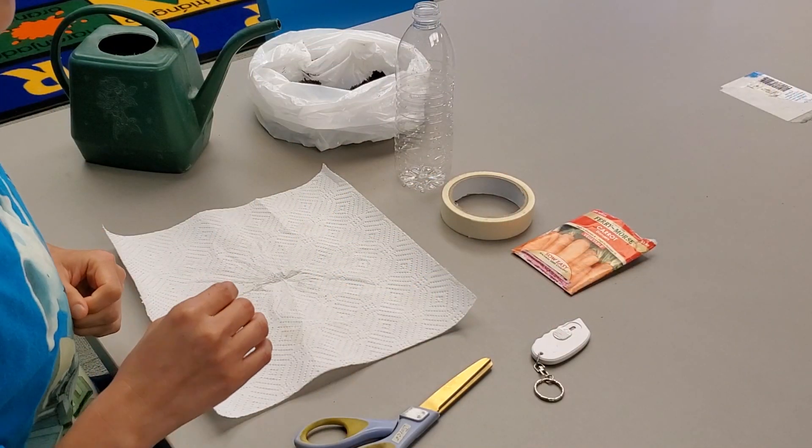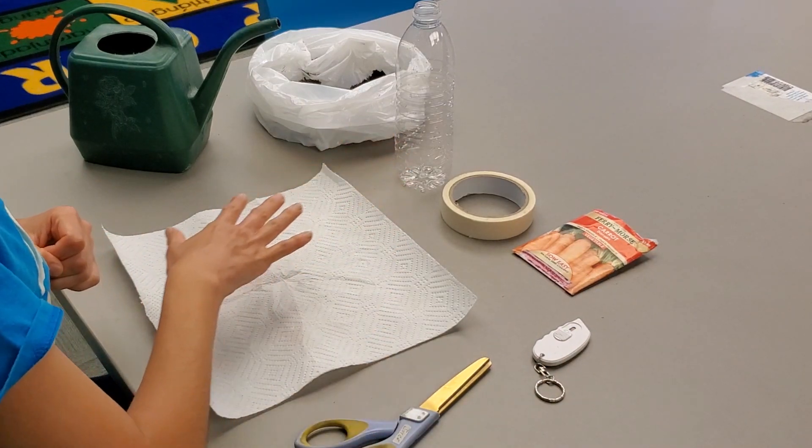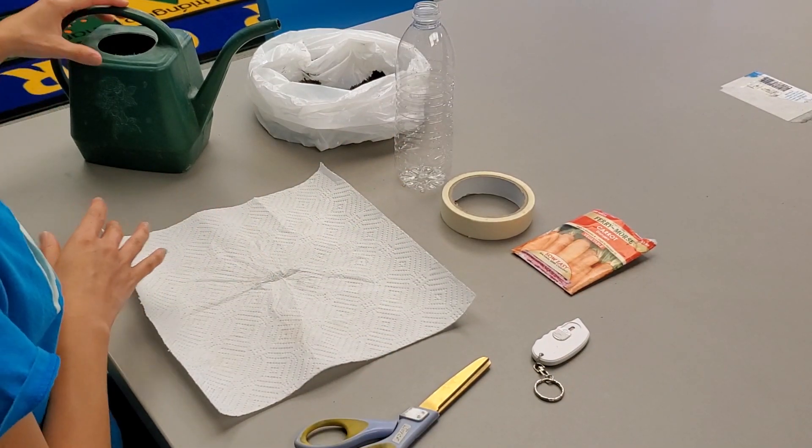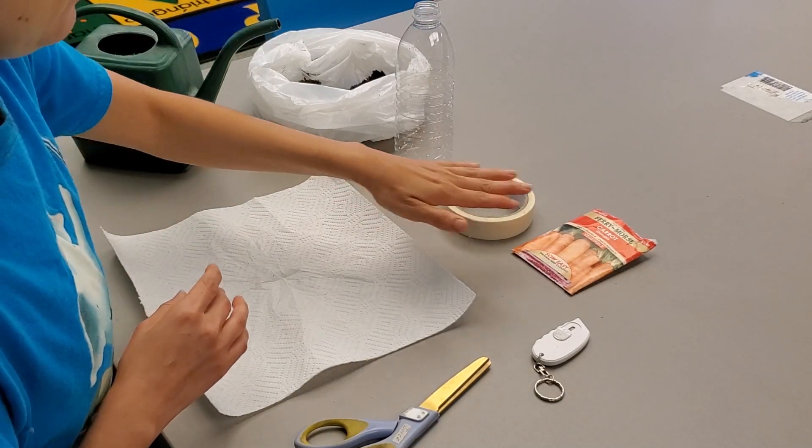For this project you're going to need a box cutter or a knife, scissors, paper towel, water, soil, an empty water bottle, tape, and seeds.